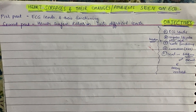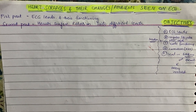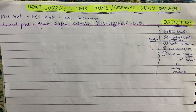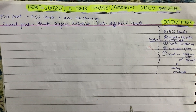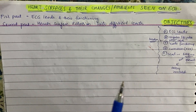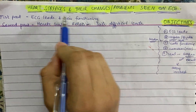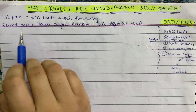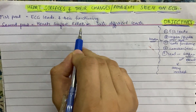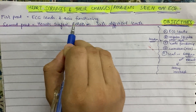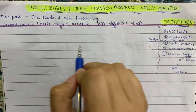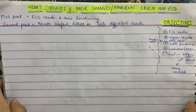Assalamu alaikum, this is Shirama Tozara. Today my topic of discussion is what are the different surfaces of the heart and how we can find out abnormalities on different surfaces in relation to seeing different lead ECG and identifying it. I have divided my video into two major parts: first, ECG leads and how they function, and second, different surfaces of the heart, their abnormalities, and which surface abnormality is seen on which ECG lead.